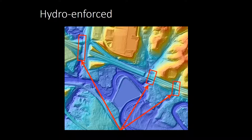A second process that can be done in your DEM is hydro enforcement, which is where obstructions to flow are cut through a DEM to allow the water to continually move through. In this example, we have roadways that would have naturally impeded the flow based on the LIDAR because they're seen as a dam, but now they've been cut through, which allows the water to flow on through.